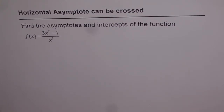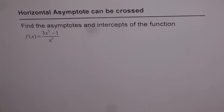Horizontal asymptotes can be crossed. Here is an example to show you that. Find the asymptotes and intercepts of the function f(x) = (3x² - 1) / x³. The whole idea of this question is that it has both horizontal and vertical asymptotes. We will try to analyze whether we can really cross these asymptotes or not — that is what we will analyze with this very beautiful example.